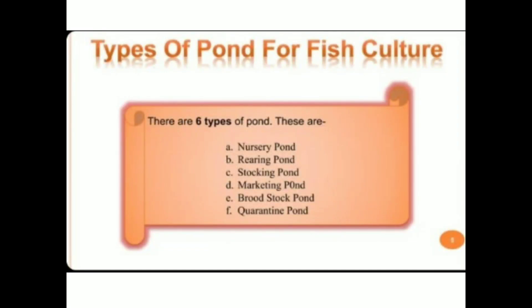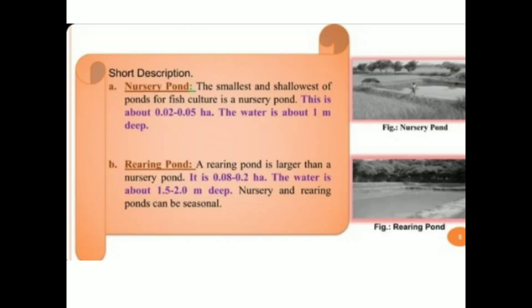Hello dear viewers, I'm Mysul Nasir and you're watching Mr. Zolli's YouTube channel. Today we are going to discuss some topics related to the fish pond. Initially we are going to look at the types of fish pond. There are basically six types: first is nursery, second is rearing, third is stocking, fourth is marketing, fifth is broodstock, and sixth is quarantine pond.